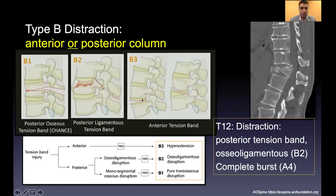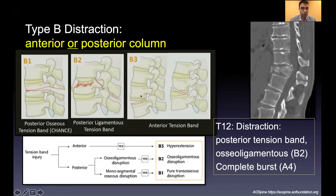A clinical pearl: in patients with a hyperextension injury of the ALL or disc space, you may see small gas bubbles or black dots at the ALL or inside the disc space, sometimes even in the spinal canal. In a patient with a rigid spine from AS or DISH, this finding should raise your suspicion. Play it safe and get an MRI.